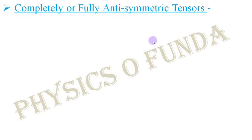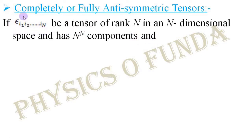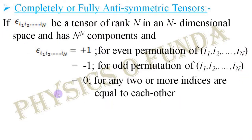Let us start with completely or fully anti-symmetric tensors. We consider a tensor epsilon with indices i1, i2, up to i_n. Clearly, this is a tensor of rank n in an n-dimensional space, so it has n^n components. If the given tensor holds these properties simultaneously, then the tensor is called a completely or fully anti-symmetric tensor.